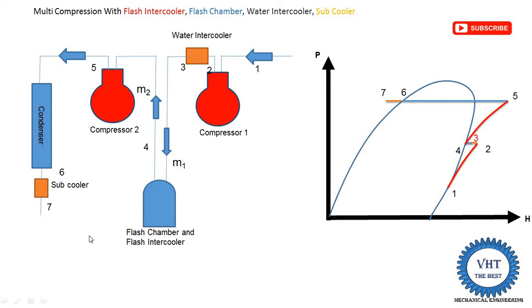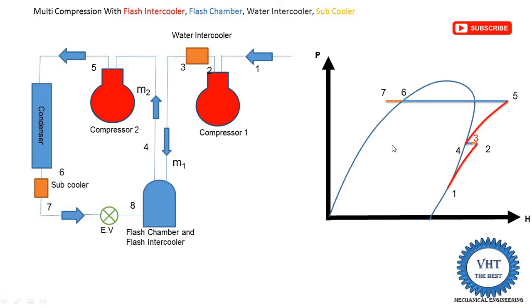Then this refrigerant is supplied into the flash chamber and flash intercooler. In between, we need to install one expansion device because the pressure after the subcooler is high pressure and the pressure in the flash chamber or intercooler is intermediate pressure. Expansion takes place, pressure changes from high to intermediate, and the process is 7 to 8. The refrigerant passing through the expansion valve undergoes an isenthalpic process where enthalpy is constant. From point 7, the line moves downward since pressure is reduced, giving the 7 to 8 process.